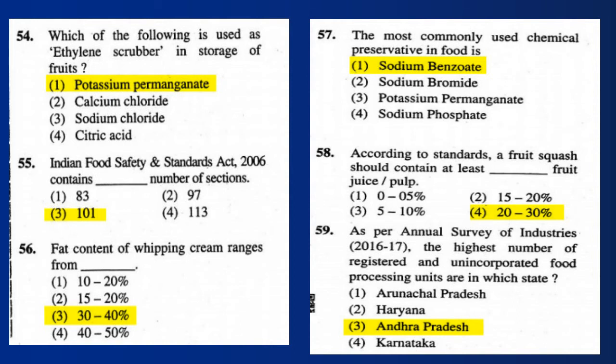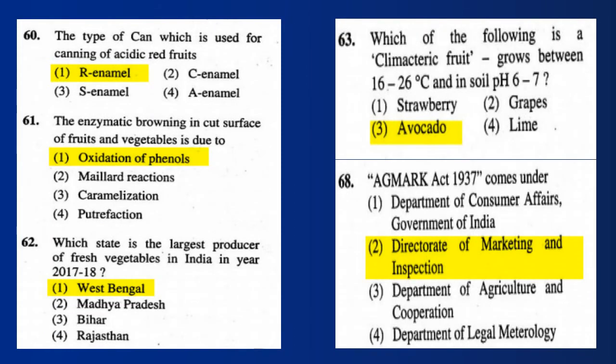Question 60: The type of can used for the canning of acidic red fruits is enamel-lined. Question 61: The enzymatic browning on the cut surface of fruits and vegetables is due to oxidation of phenols.